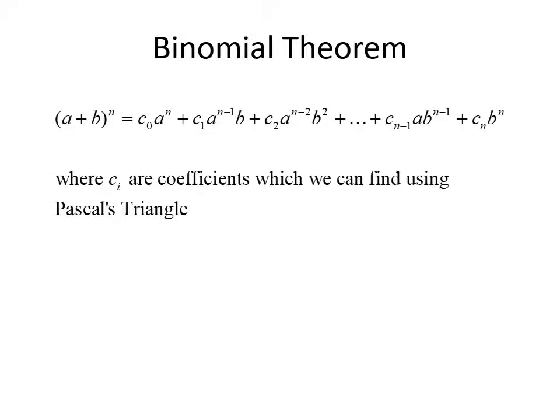The binomial theorem says (a + b) to the nth power equals c-naught times a to the n, plus c1 times a to the n-minus-1 times b, plus c2 times a to the n-minus-2 times b squared, and the terms continue with a coefficient — the power on a decreases and the power on b increases — until we get to c sub (n-1) times a times b to the n-minus-1, and finally c sub n times b to the nth power. The c terms are called coefficients, and in this lecture we're going to talk about finding those coefficients using Pascal's triangle.